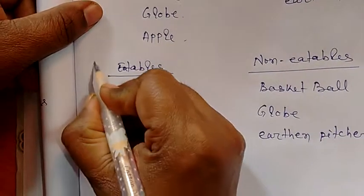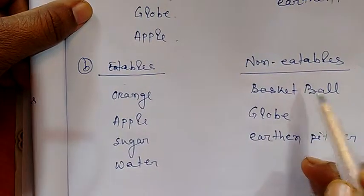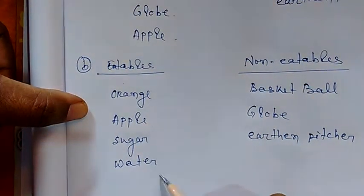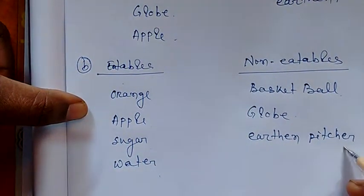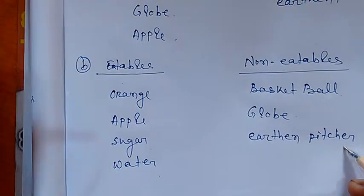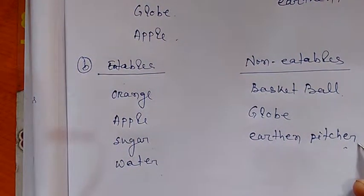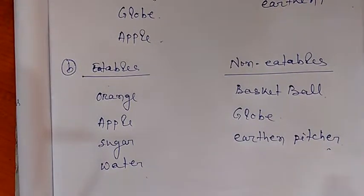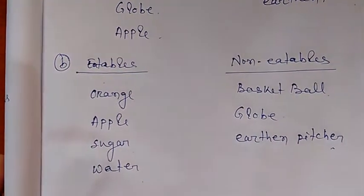Question number 5B is eatable and non-eatable. Eatables are: orange, apple, sugar, water. Non-eatables are: basketball, glue, and the pitcher. The pitcher has various types of shapes, so we cannot place it simply in the round or non-round category.